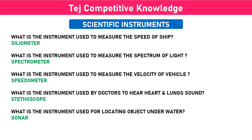What is the instrument used to measure the spectrum of light? Spectrometer. What is the instrument used for measuring the velocity of a vehicle? Speedometer.